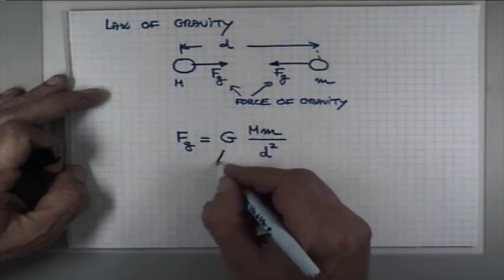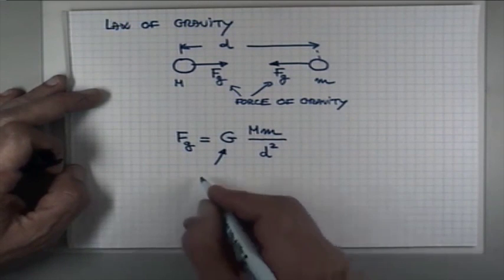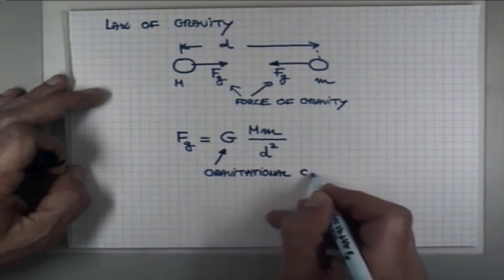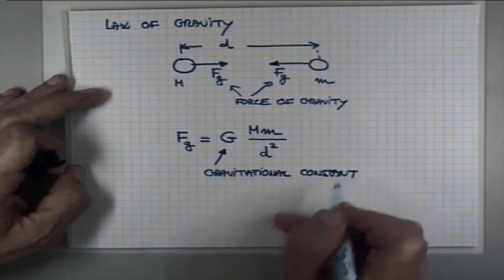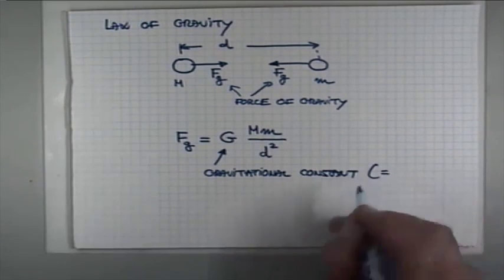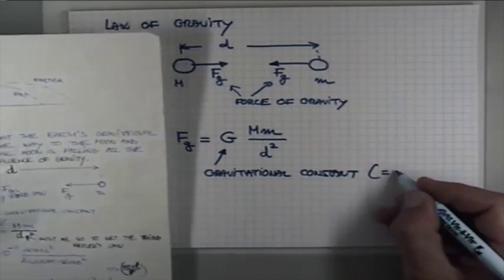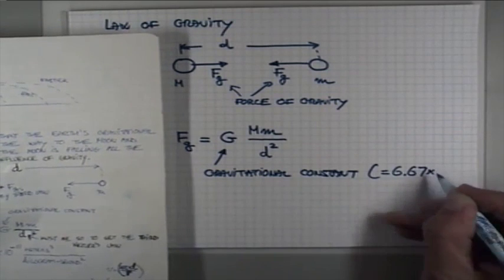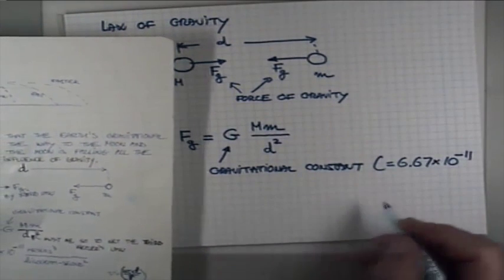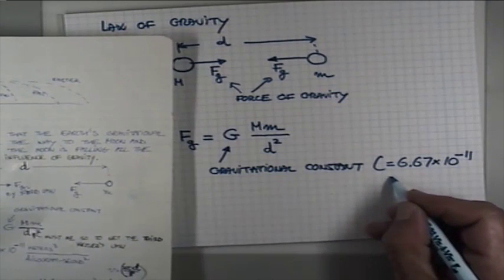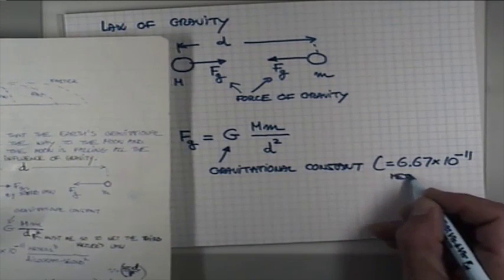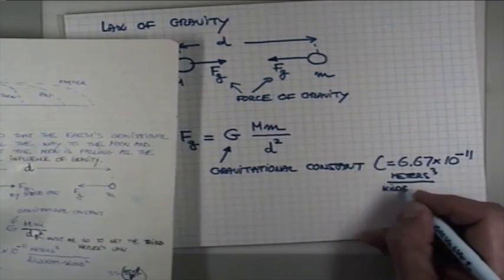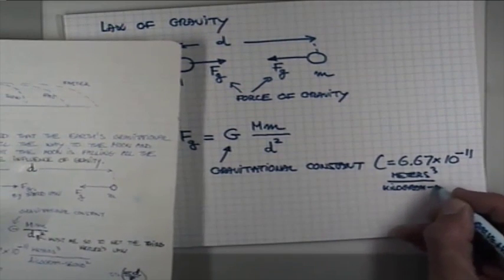Okay? And this constant here is known as gravitational constant. And it has a value that you don't need to remember, but I'll write it down for the sake of completeness of 6.67 times 10 to the minus 11. And I'll choose the units so that it's meters cubed over kilogram and second squared.